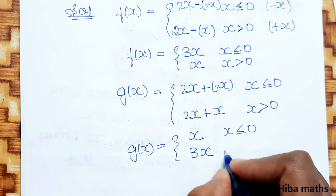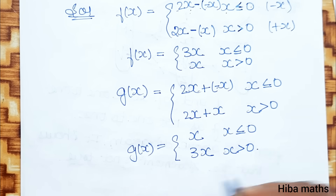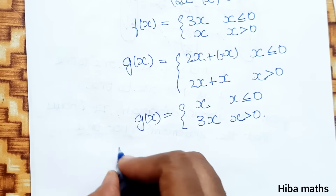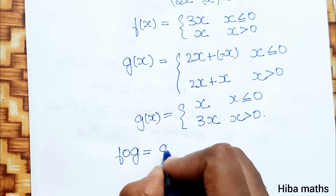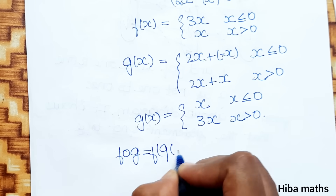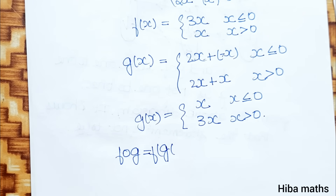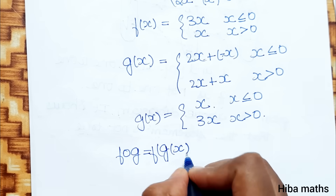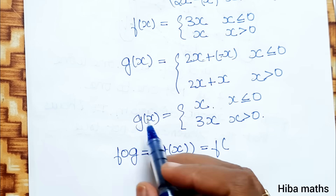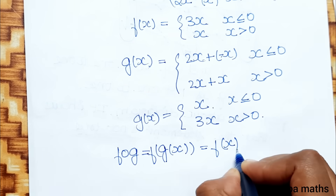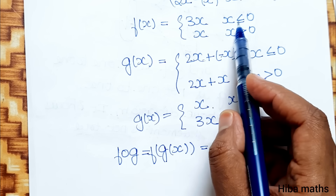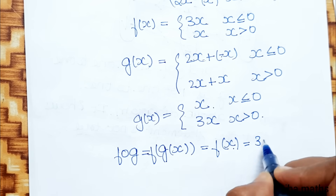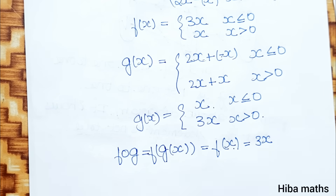Now the question is how to find f of g. So f of g of x — g of x first: when x is less than or equal to 0, g of x is equal to x. Now f of x applied to that is equal to 3x.